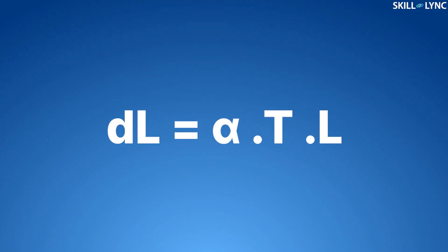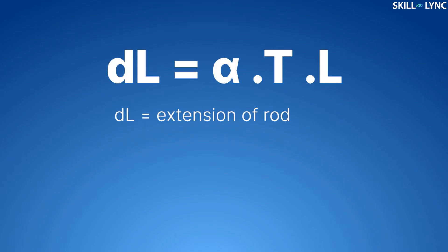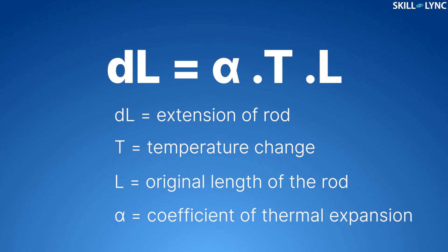The extension of the rod is given by DL, where DL is the extension of rod, T is the temperature change, L is the original length of the rod, and alpha is the coefficient of thermal expansion.